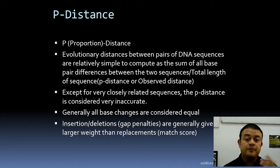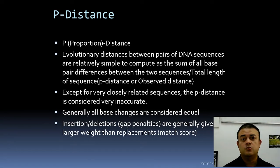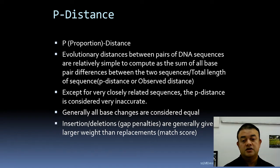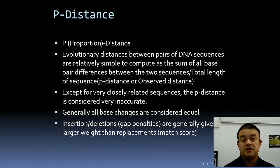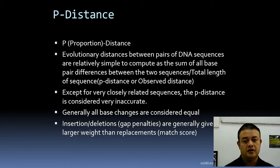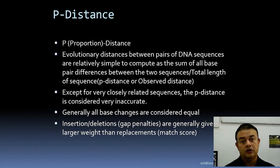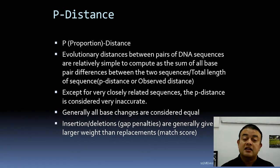Except for very closely related sequences, the p-distance is quite inaccurate. For human and chimpanzee it's acceptable, but for cat and human it's not a good method. All base changes are treated as equal, but transitions and transversions do not have the same probability — and none of those differences are considered when calculating p-distance. Insertion/deletion gap penalties are generally given larger weight than substitutions, but p-distance doesn't account for this either.